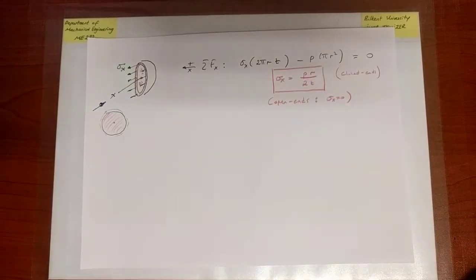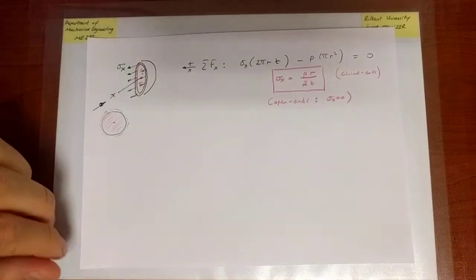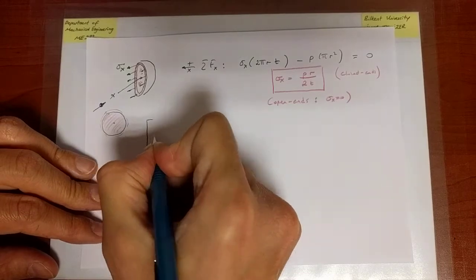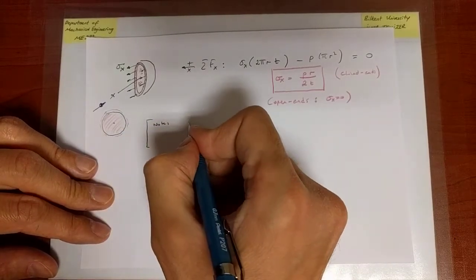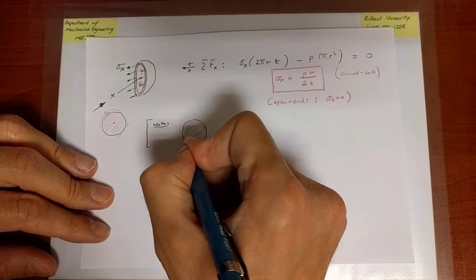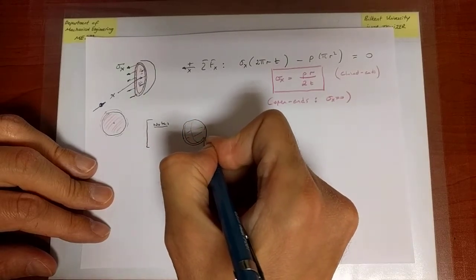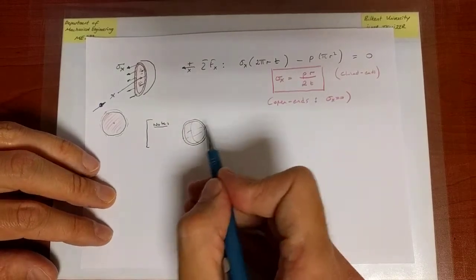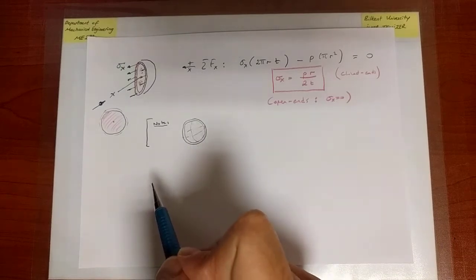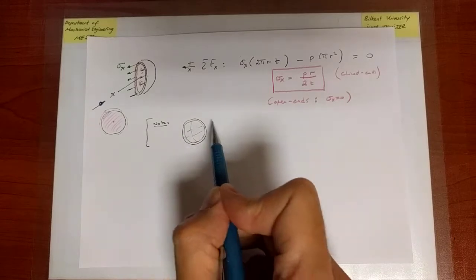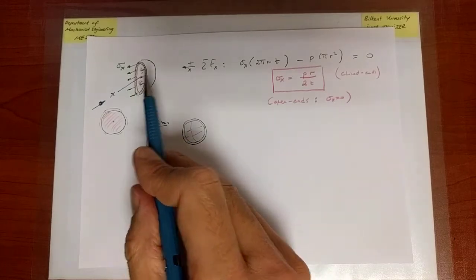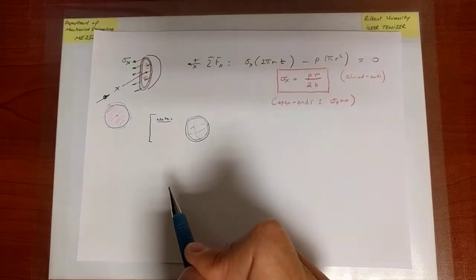The second remark addresses a spherical pressure vessel geometry. If I had a spherical pressure vessel — simply a sphere with some wall thickness and radius — I'd like to look at the stresses that form within the structure. By the same argument, I could take different cuts. In the cylindrical case, I took an axial cut and also a tangential cut, and those revealed two different pictures.